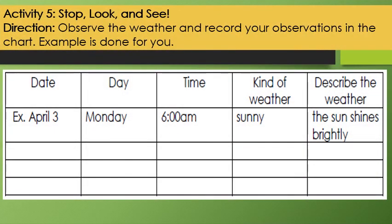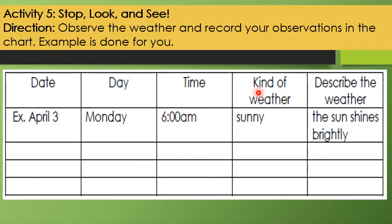Activity 5: Stop, Look, and See. Observe the weather and record your observations in the chart. The example is done for you. Record the date, the day, the time, the kind of weather, and a description of the weather. For example: April 3, Monday, 6:00 a.m. — the weather is sunny. Description: the sun shines brightly.